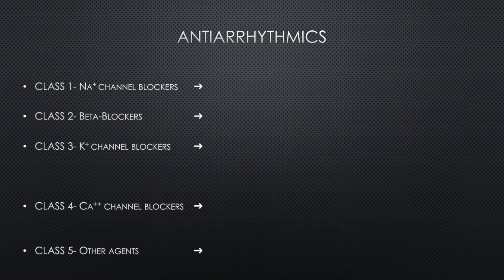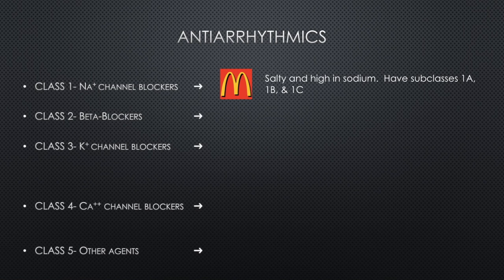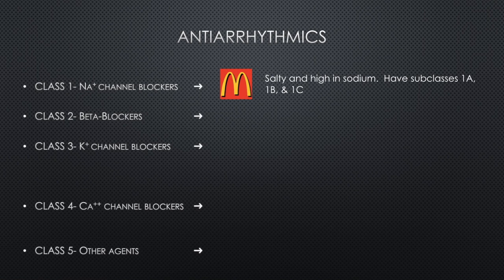Your class one antiarrhythmics are associated with McDonald's because McDonald's food is really unhealthy for you — it's salty and high in sodium. These are your sodium channel blockers. In this class there are three subclasses: 1A, 1B, and 1C, which we will go over at the end of the presentation.